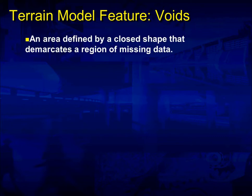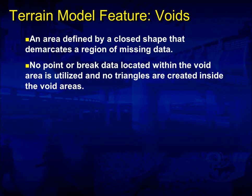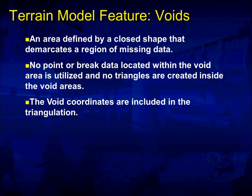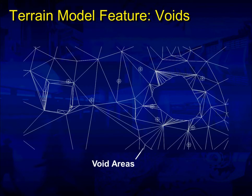Terrain model feature: voids. An area defined by a closed shape that demarcates a region of missing data is considered a void. No point or break data located within the void is utilized, and no triangles are created inside the void area — in other words, no surface information within the void is included in the terrain model. The void coordinates are included in the triangulation, meaning the limits of the void are included. We've got two examples here: one on the right is a pond, and on the left is a building.